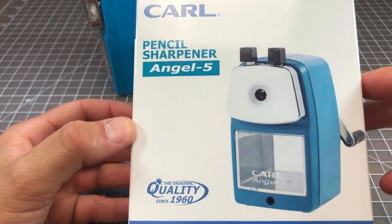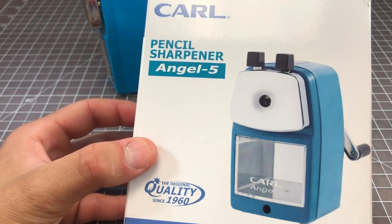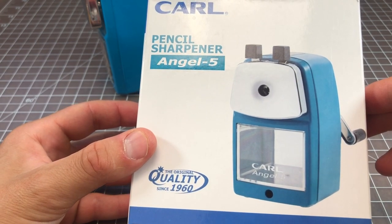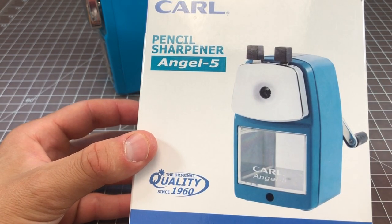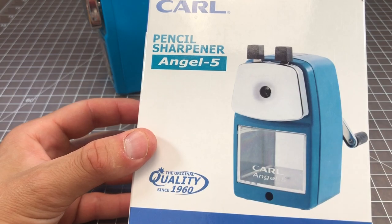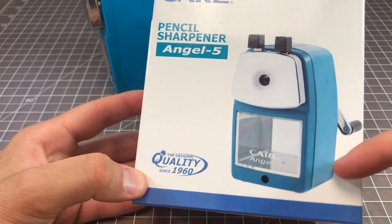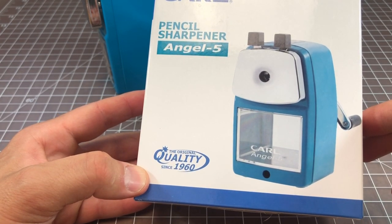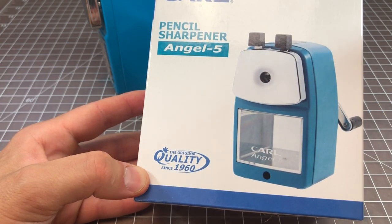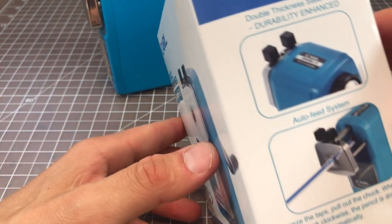So it's called the Carl, and that's the company. The Angel 5 is the model. Carl makes other products, this is just my favorite. I believe it's their most popular product, definitely their most acclaimed. The company's been around since 1960, which is great to see. I believe it's an American brand, but the sharpener is manufactured in China.